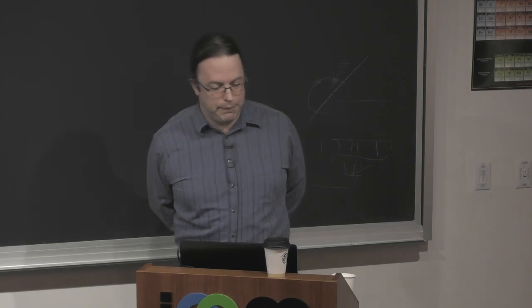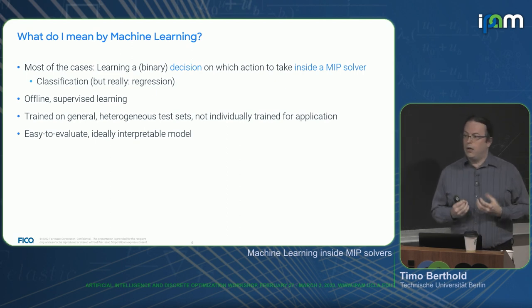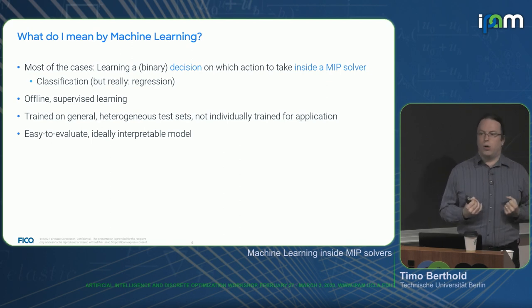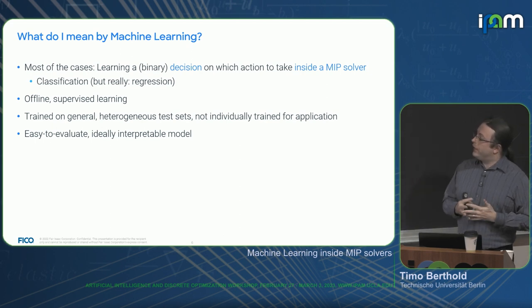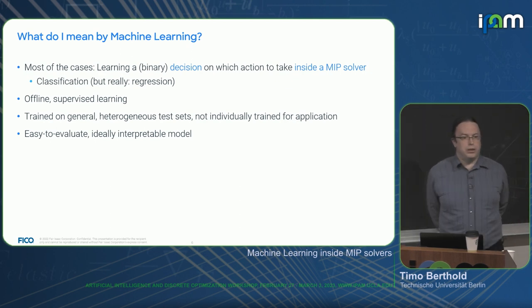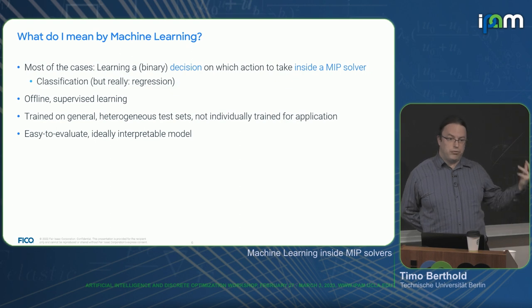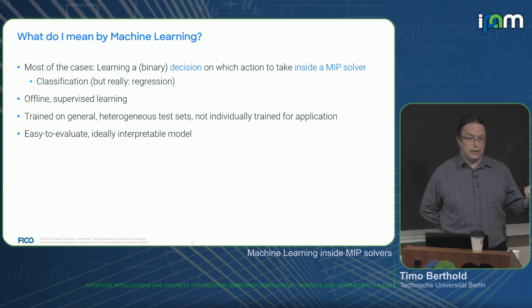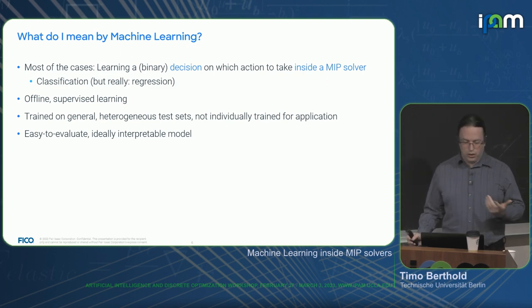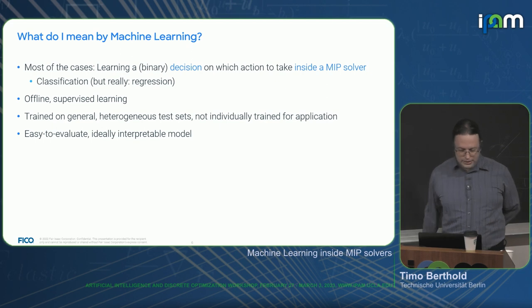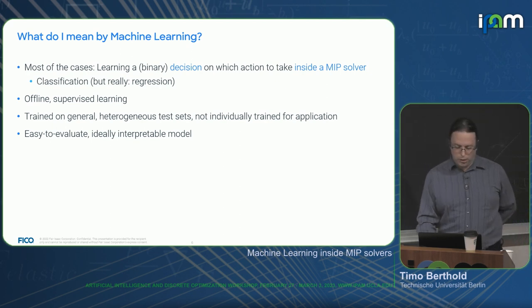What do I mean by machine learning today? In most cases, we want to learn a typically binary decision on which action to take — which of two or more alternative algorithms to run — and decide which is likely to be the better one. You could think of this as a classification task, but I will soon argue why we should rather think of this as regression. In our cases, we do offline supervised learning on very heterogeneous test sets, producing very generic labels. We want an easy-to-evaluate and ideally interpretable model.